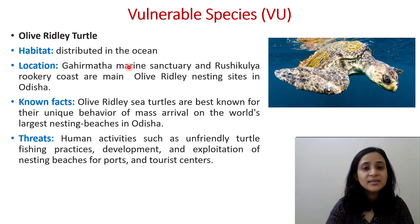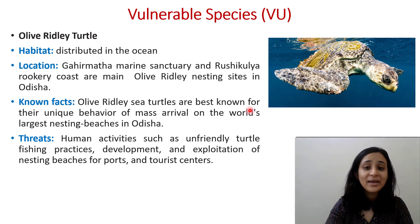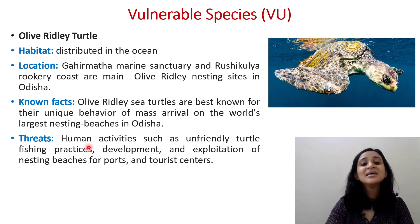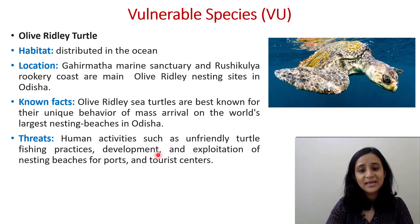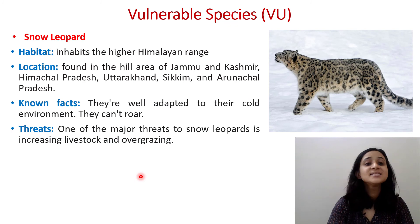Next is the Olive Ridley Turtle, also under Vulnerable. It is distributed in the ocean, with Gahirmatha Marine Sanctuary and Rushikulya coast in Odisha as the main nesting sites in India. Olive ridley sea turtles are best known for their unique behavior of mass arrival on the world's largest nesting beaches in Odisha. Threats include unfriendly turtle fishing practices and development and exploitation of nesting beaches for ports and tourism.